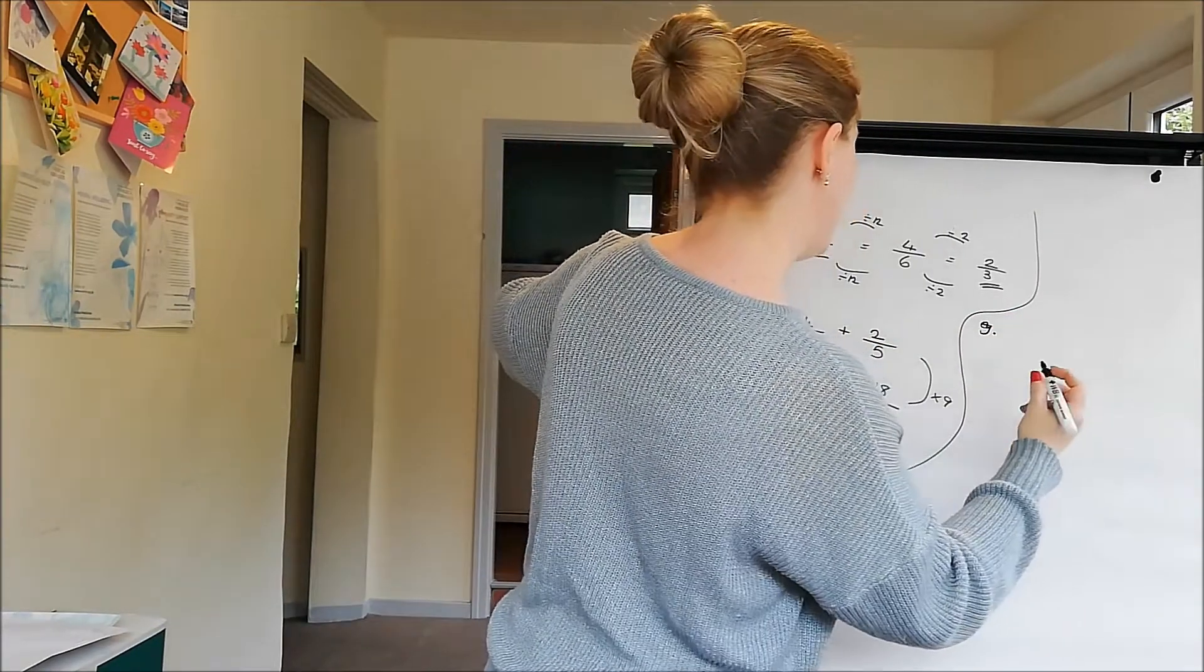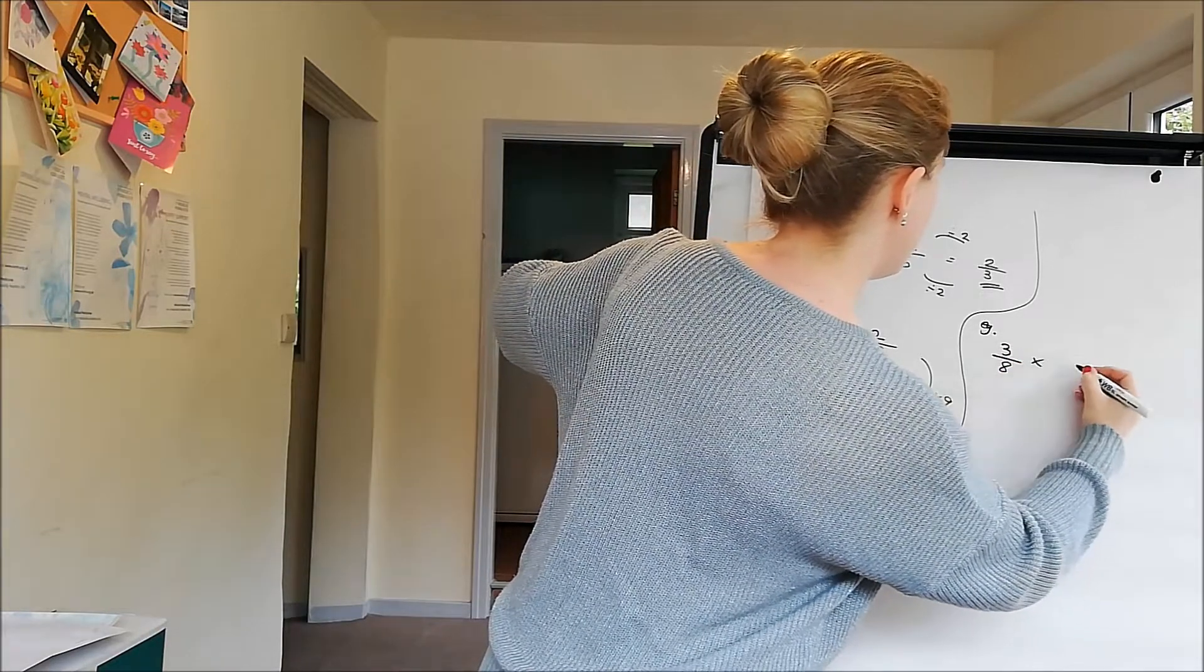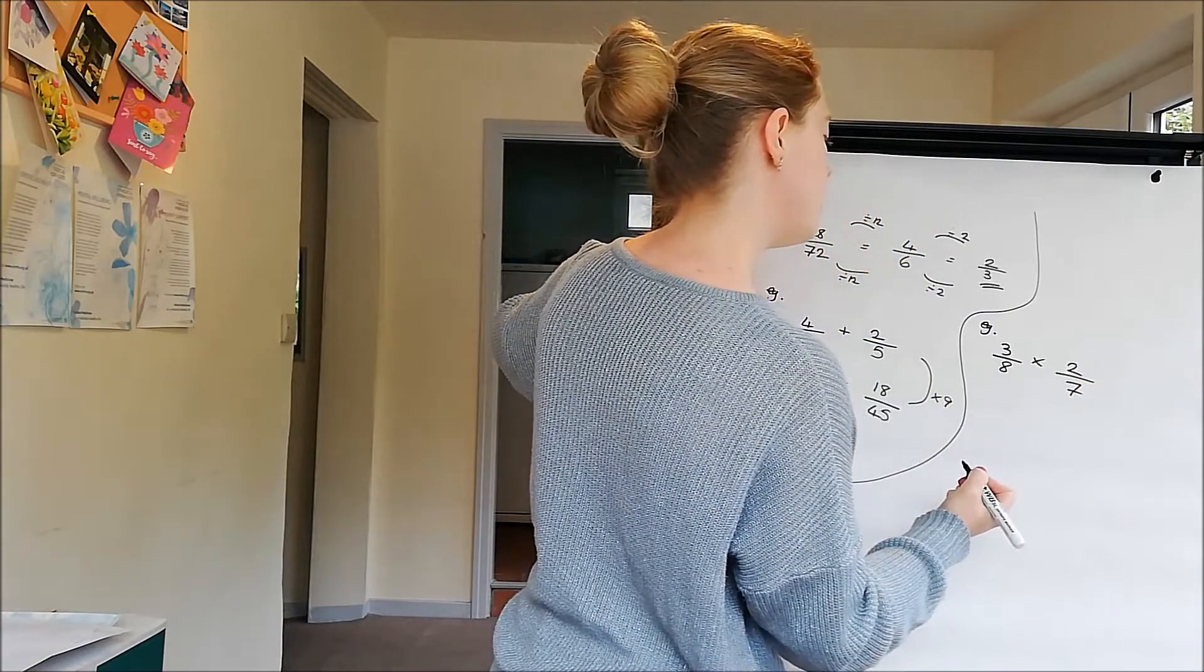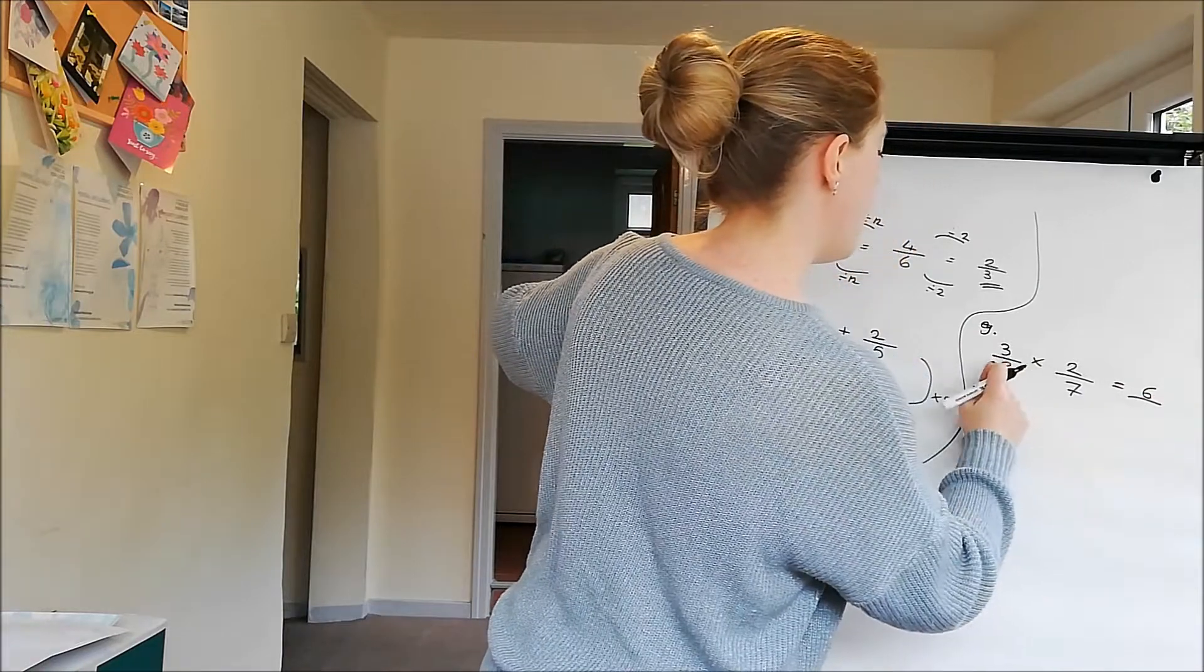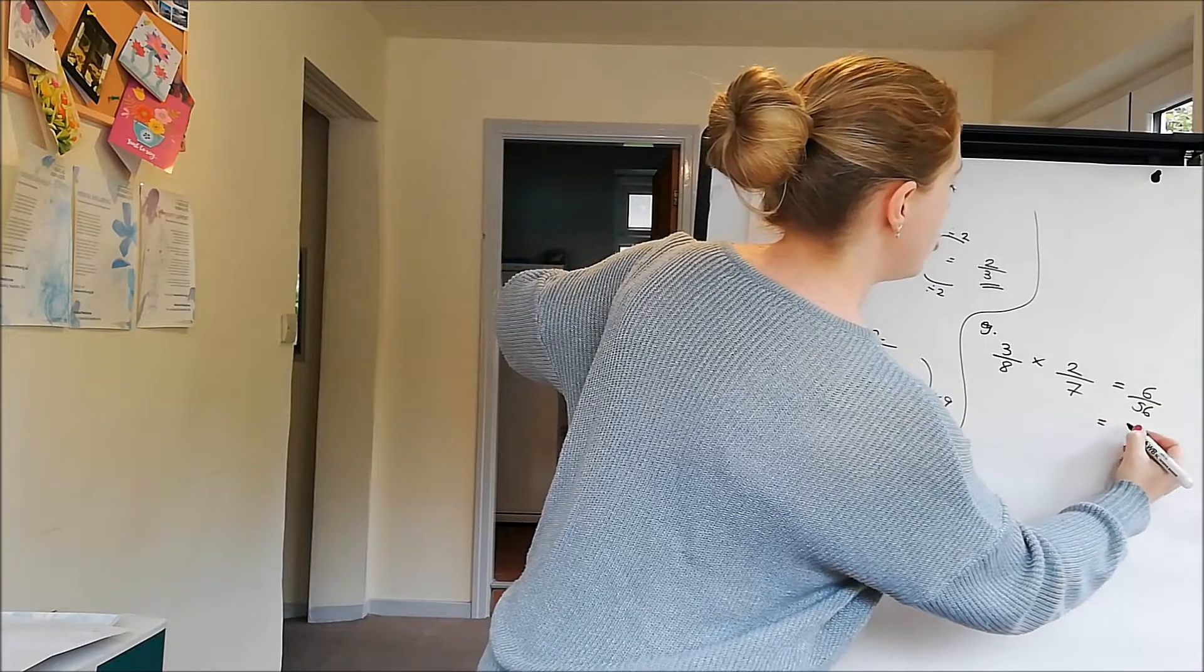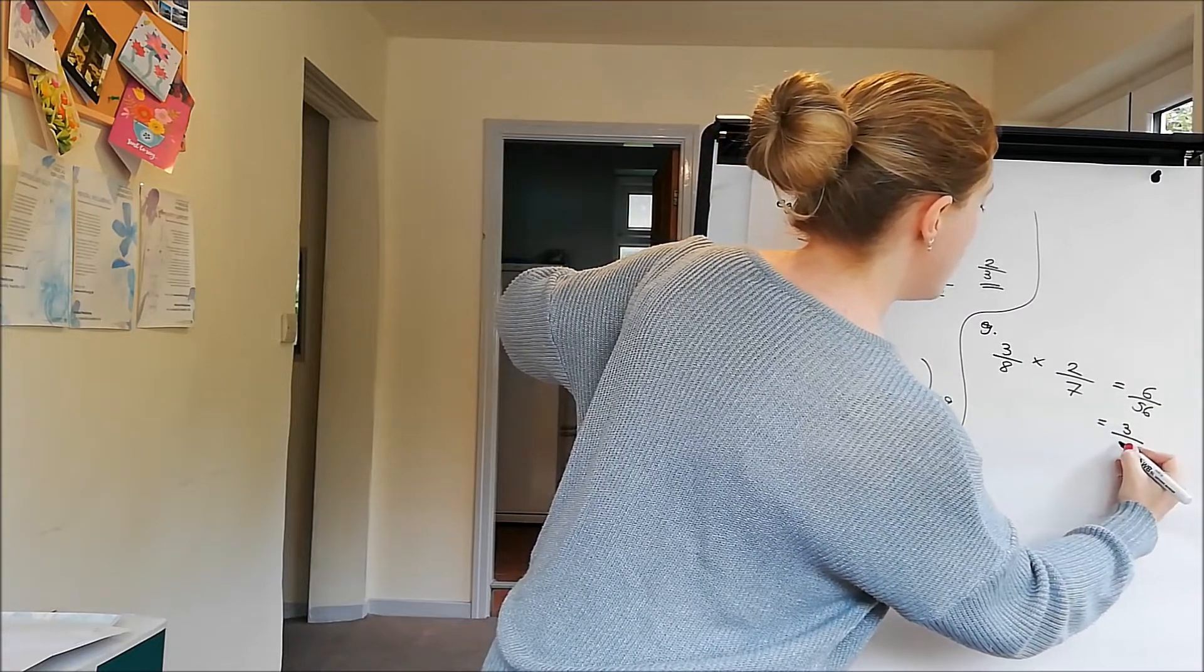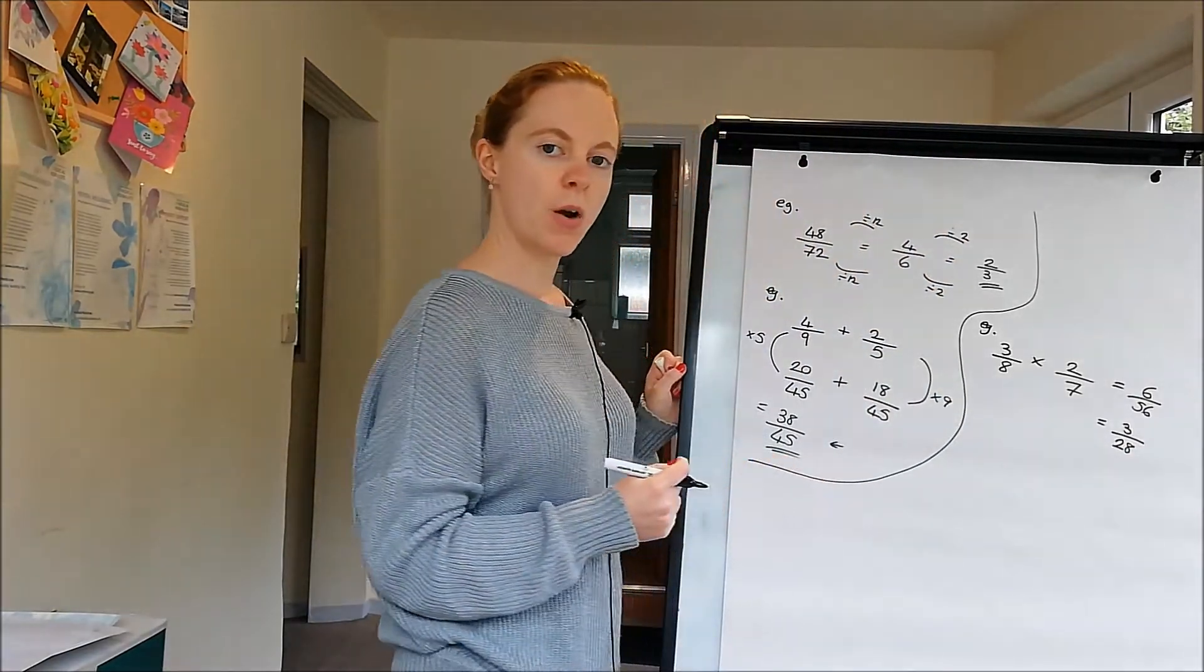For example, 3 eighths times 2 sevenths. Well 3 times 2 is 6, 8 times 7 is 56, and then each of those divides by 2 to give 3 over 28.